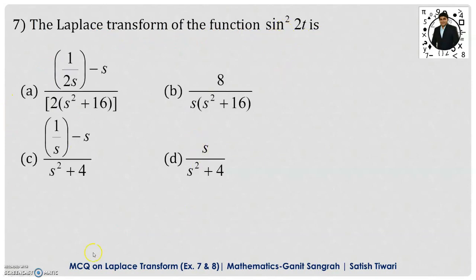We are given 4 options. First of all, we use the trigonometric formula for sin²(2t), write it in a simpler form, and then take the Laplace transform. You should know the formula: sin²(t) = (1 - cos(2t)) / 2.